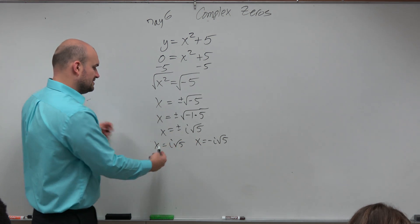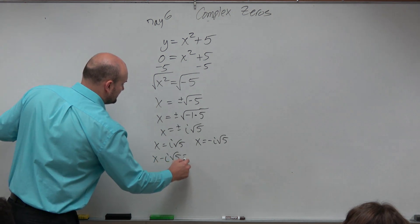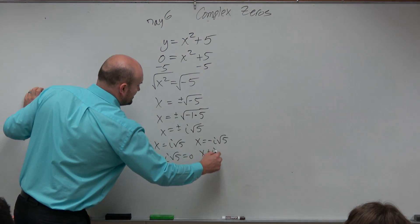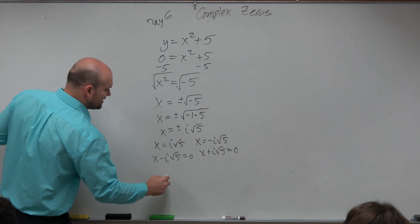Once you have your zeros, set them equal to 0: x - i√5 = 0 and x + i√5 = 0. Those are basically your two factors.